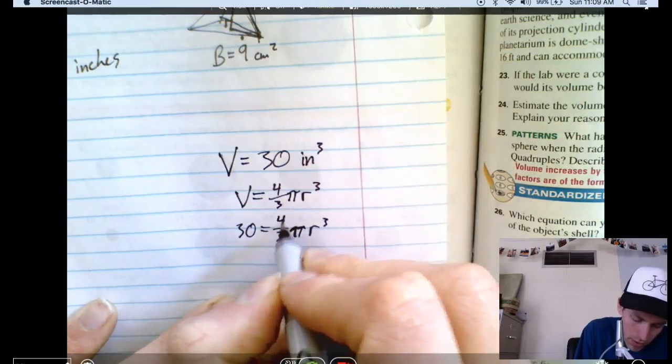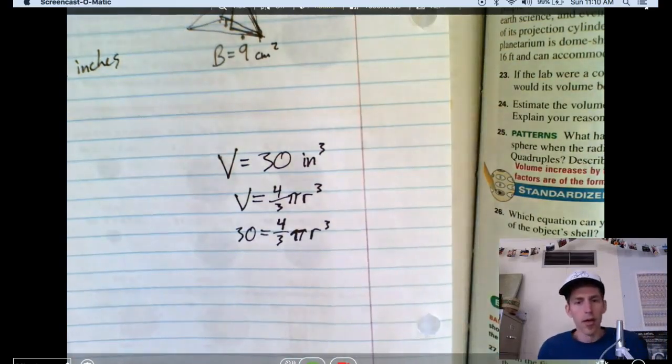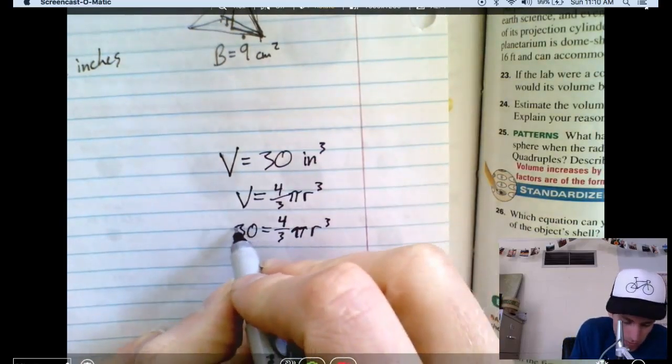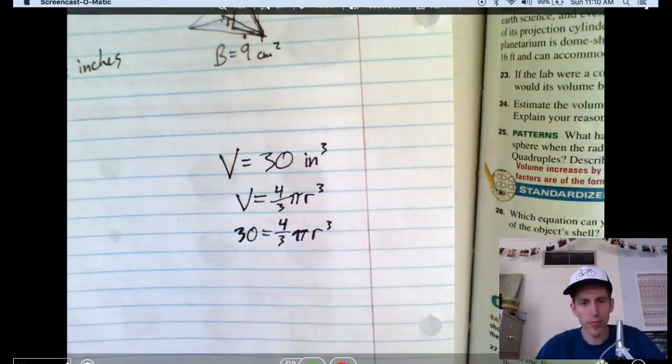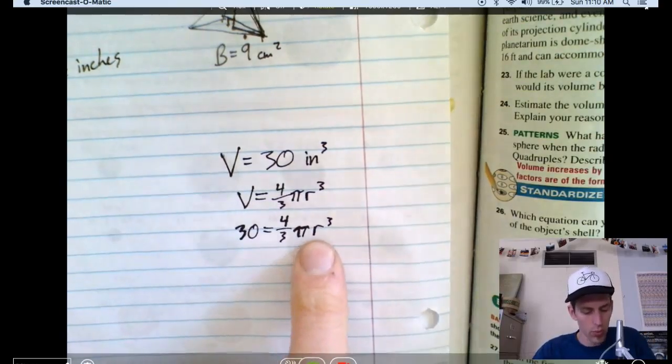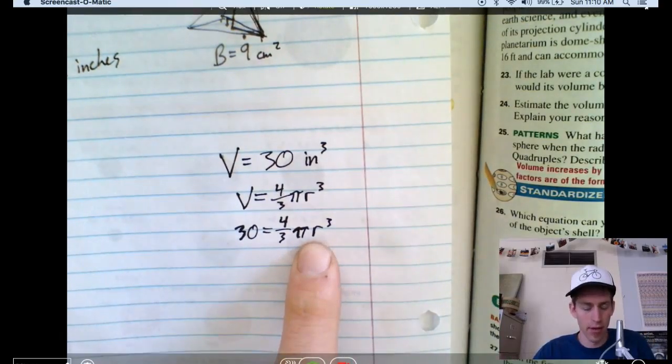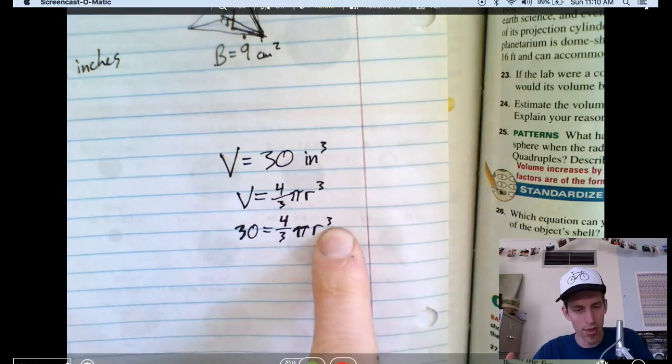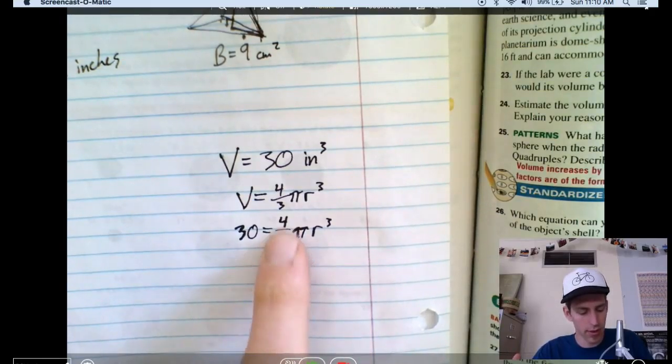Now, eighth graders, I want you to get this pointer. This is going to help you in algebra next year or whatever. We need to get r by itself. You know that, right? We're going to have to get rid of this four-thirds somehow. We're going to have to get rid of this pi somehow. And we're going to have to get rid of that three exponent somehow. Well, first order of business. Let's get rid of the four-thirds.